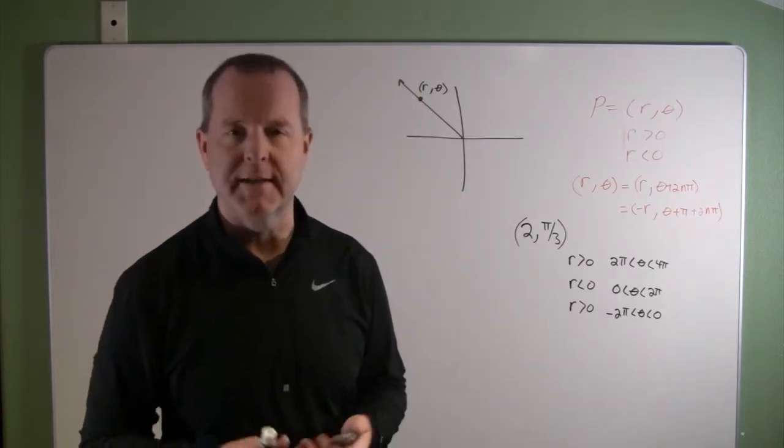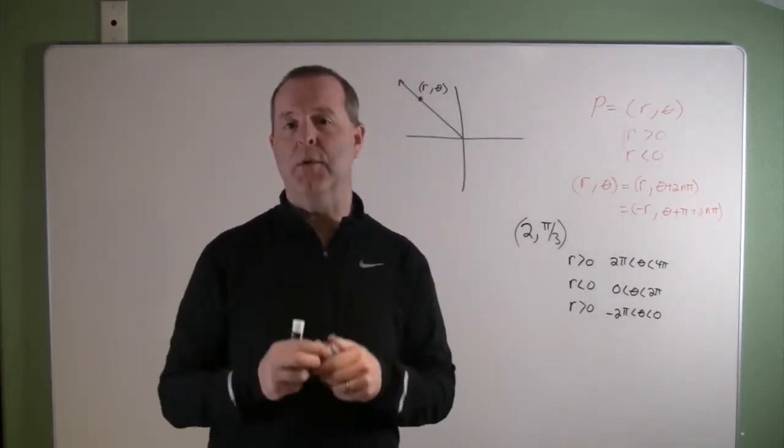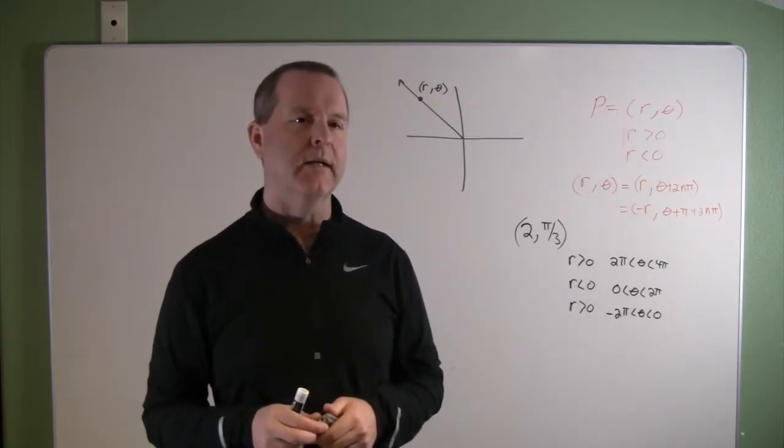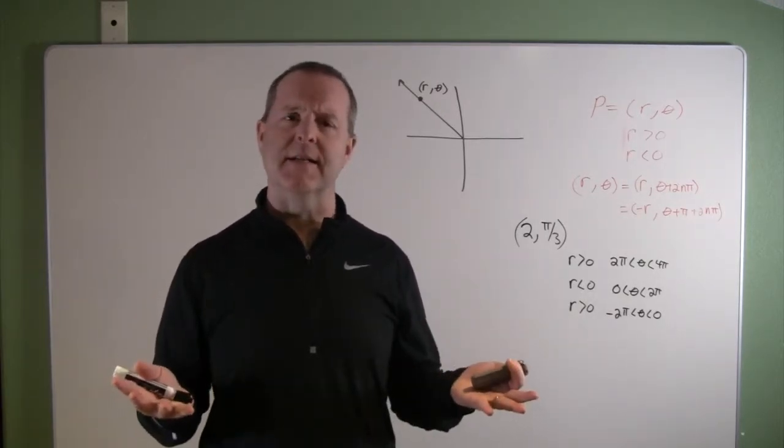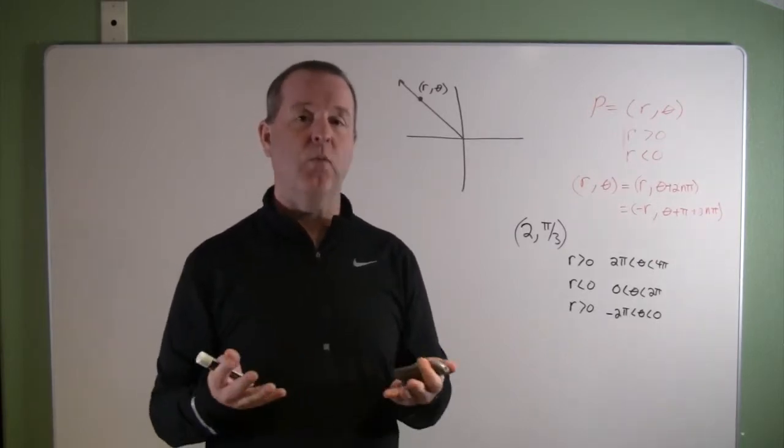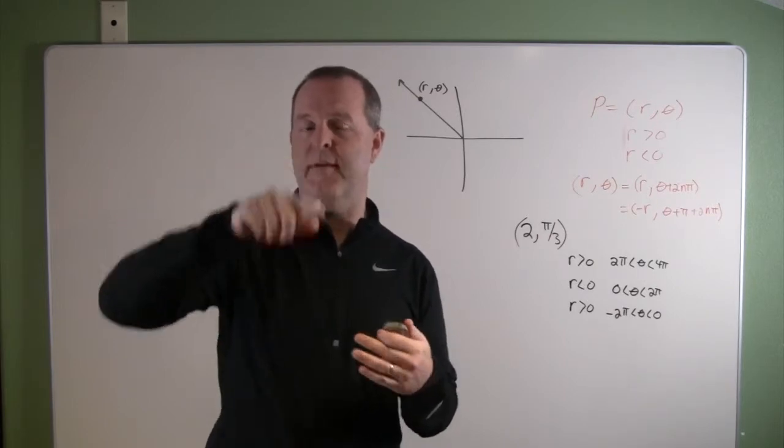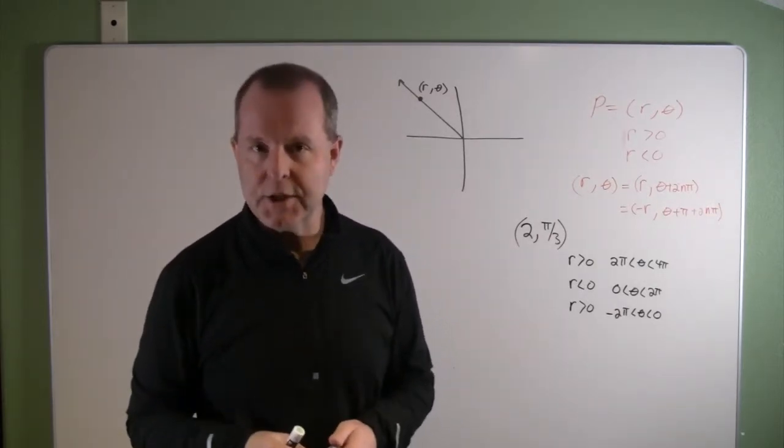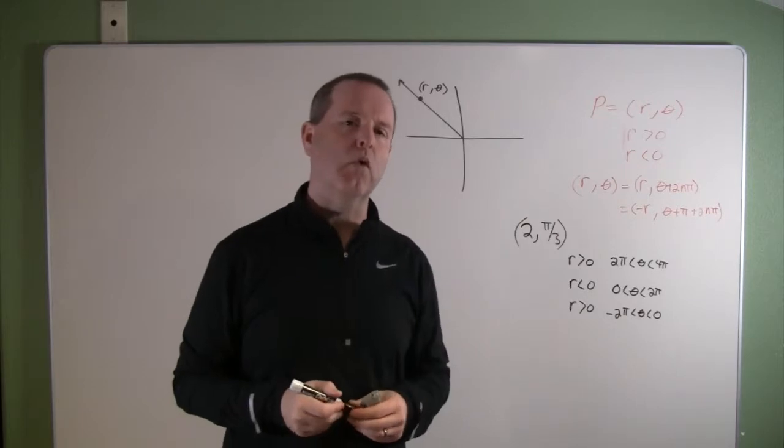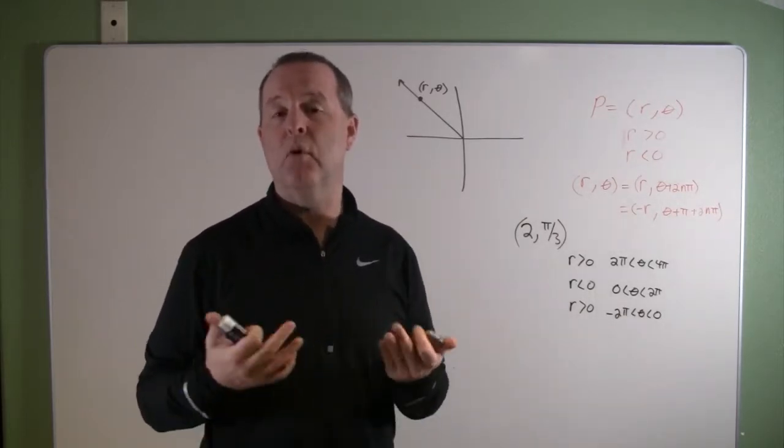When we were in the Cartesian coordinate system, every x, y had only one value. But let me contrast it with the polar coordinate system, where every time around the circle we come back to where we're at, but we've added another 2π rotation. So with polar coordinates, we can have one point represented by multiple coordinates.